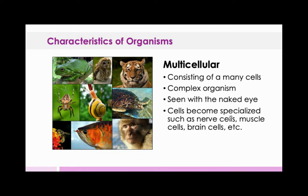Cells become specialized, such as nerve cells, muscle cells, brain cells, etc. You have a lot of different cells inside your body that do different things — cells that make up your eyes so that you can see, which are different from your fingernails, your bones, your skin, your brain cells, and nerve cells. You have lots of variation within your cells, which makes these organisms far more complex.